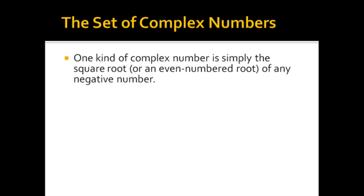So one kind of complex number is simply the square root, or an even-numbered root of any negative number. A cube root won't work because you will get a real number back out. But if you take a square root, a fourth root, a sixth root, you will get a number that is complex if there is a negative number under the radical. So these are called imaginary numbers.